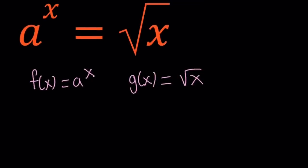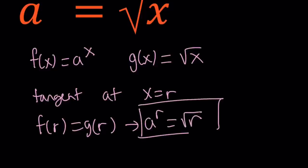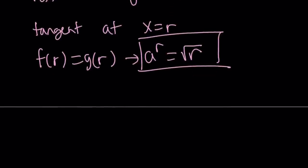Here, we have these two functions. And let's say they are tangent at x equals r. r is for root. So that means f of r equals g of r because the functions are going to intersect at that point. And f of r is a to the power r. g of r is square root of r. So that's our first equation.